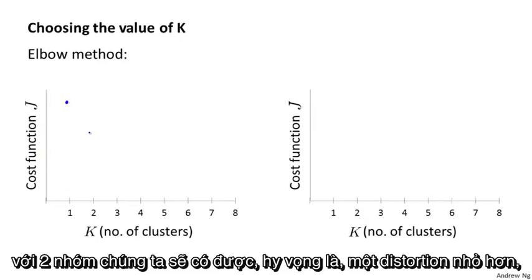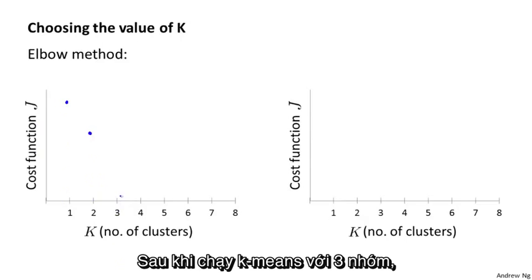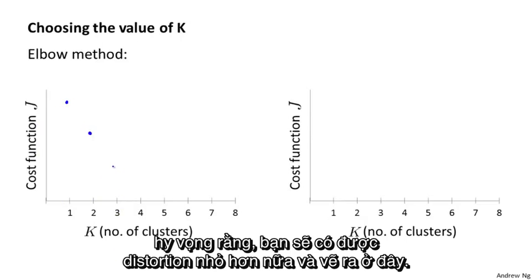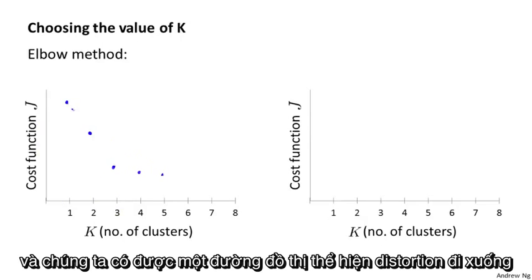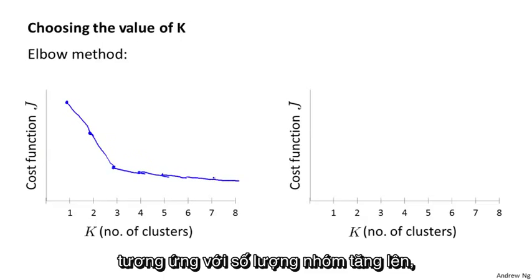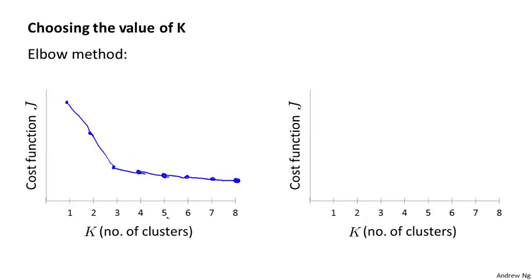But then with two clusters, we should get hopefully a smaller distortion, and so plot that there. And then run k-means with three clusters, hopefully we get even smaller for the distortion, and plot that there. And run k-means with four, five, and so on. And so we end up with a curve showing how the distortion goes down as we increase the number of clusters. And so we get a curve that maybe looks like this.